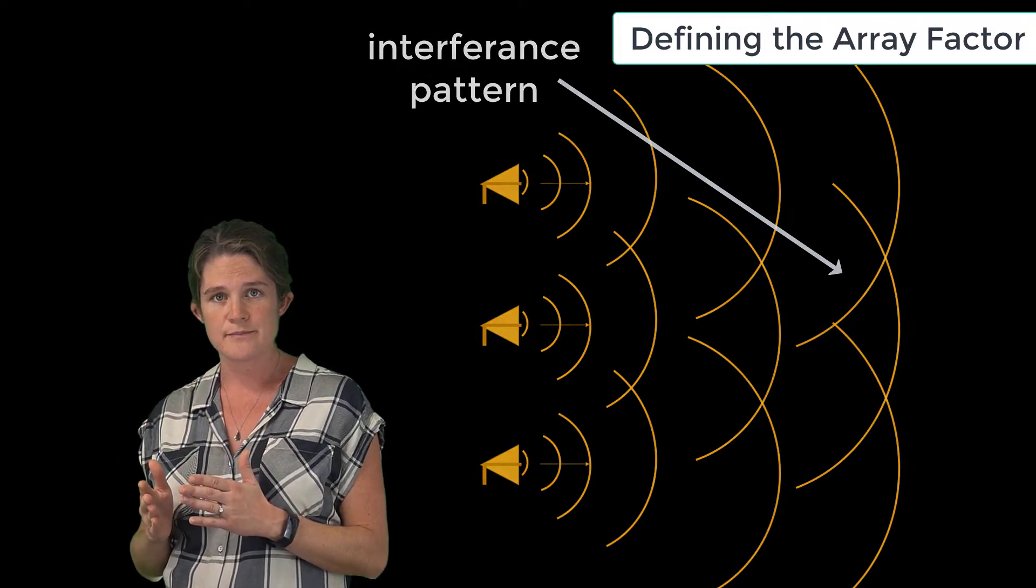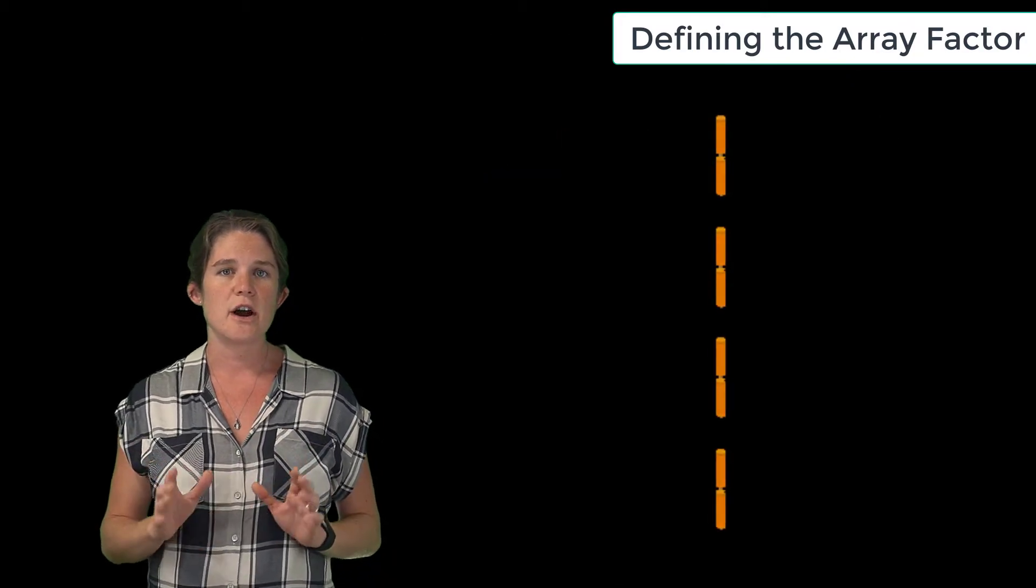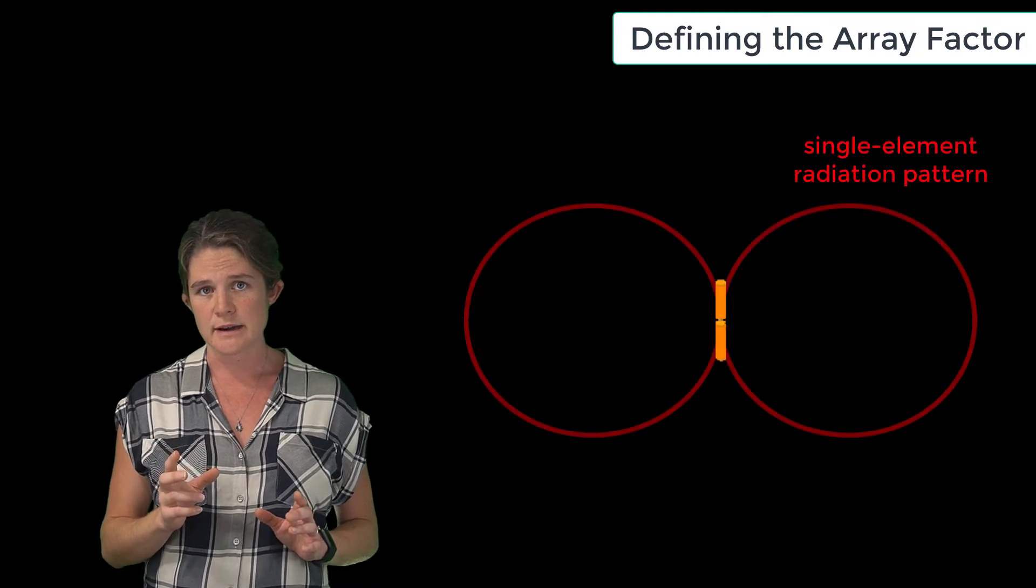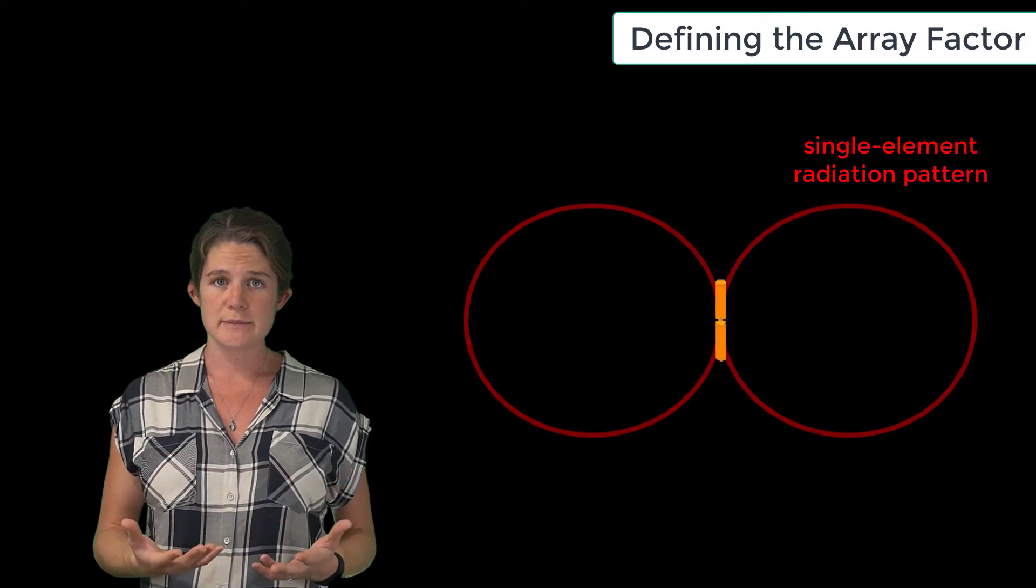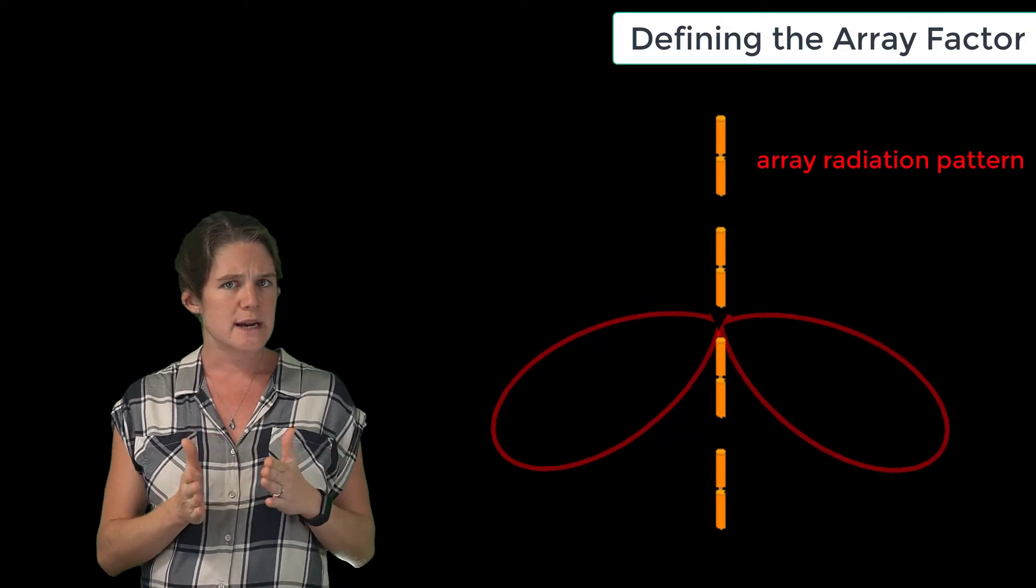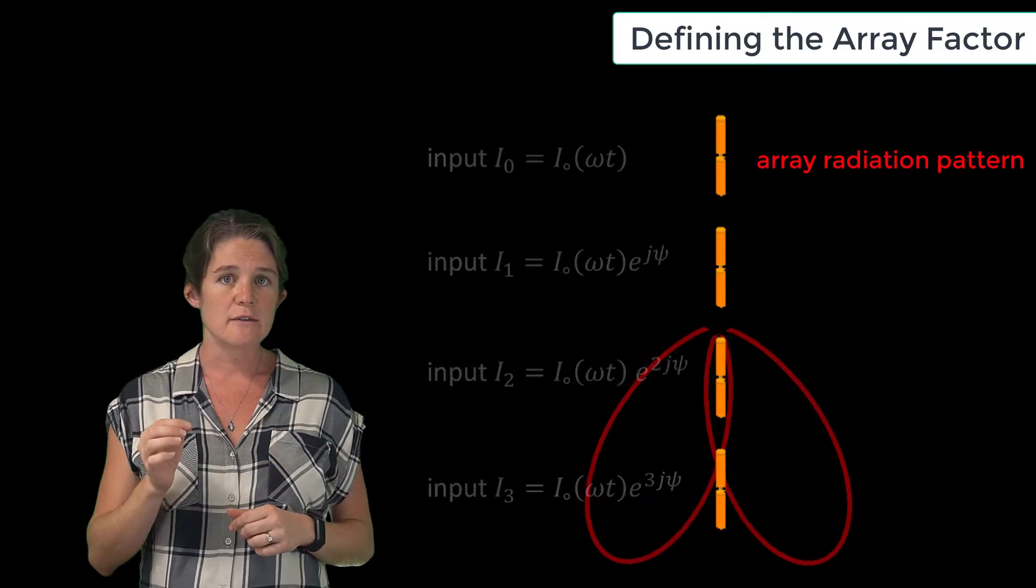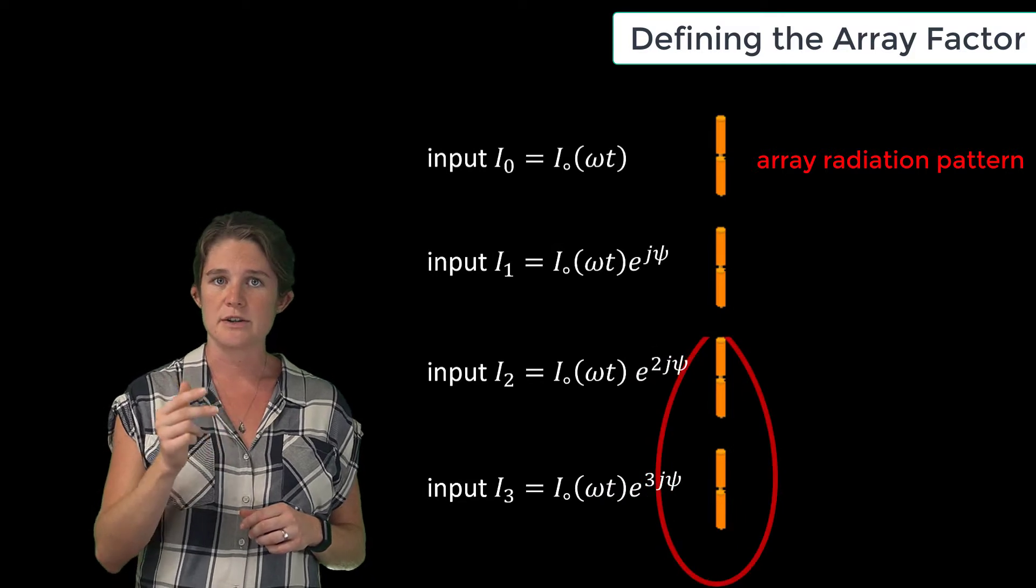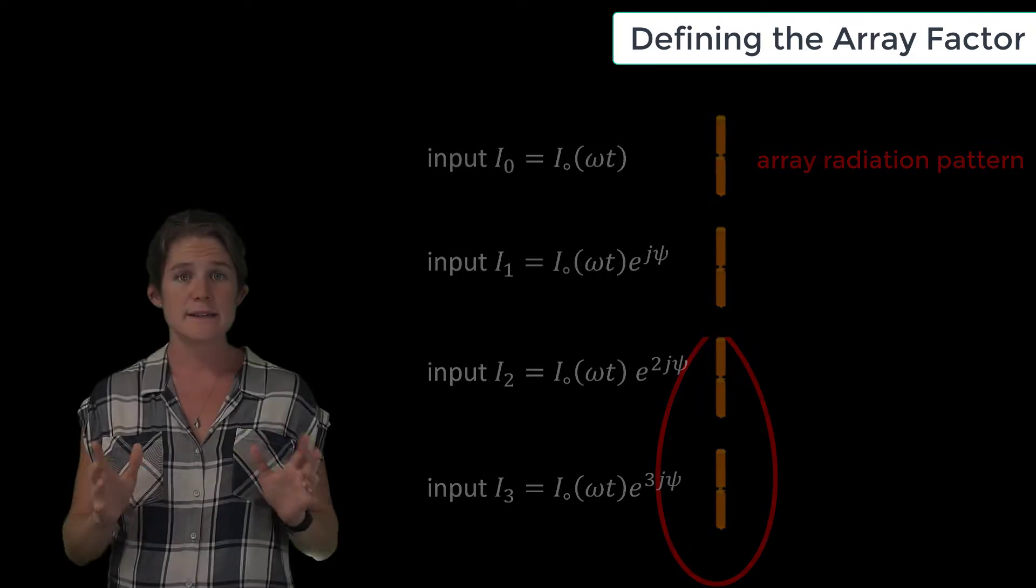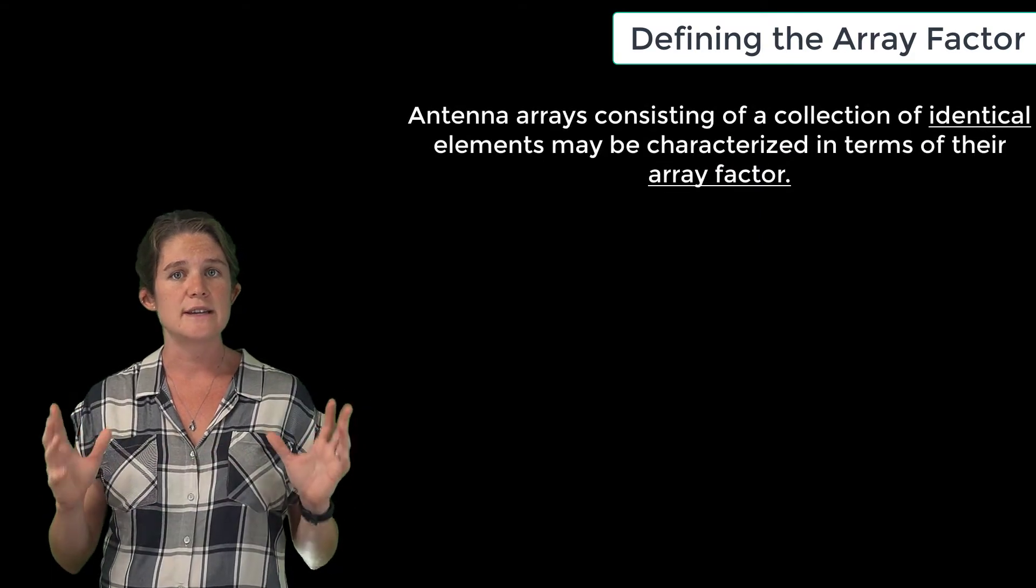Such antenna arrays are often used to enable tighter directivity than could be achieved with a single element design, and also to enable beam steering, where the direction of the main lobe of radiation may be dynamically adjusted through electronic variation of the input to the various array elements.